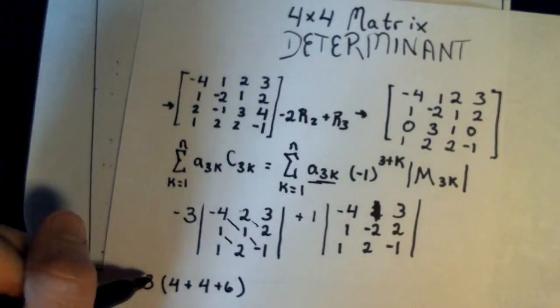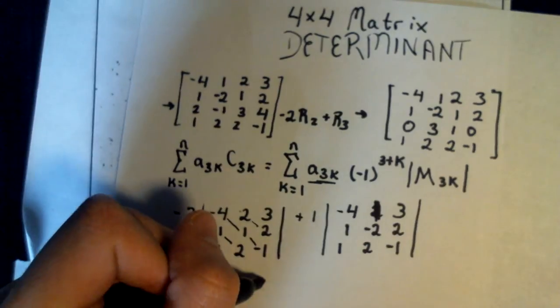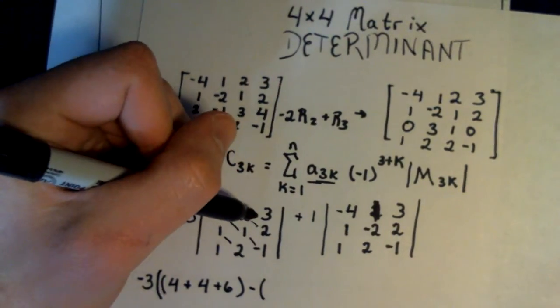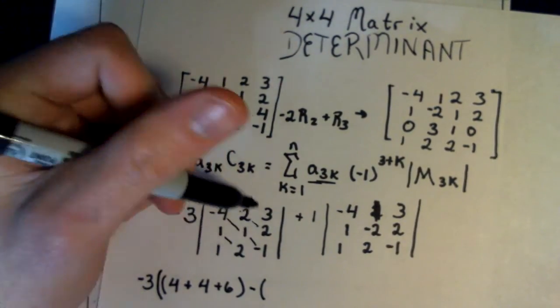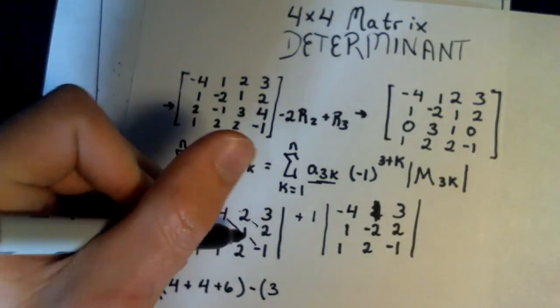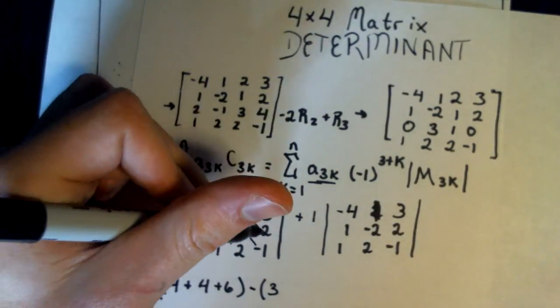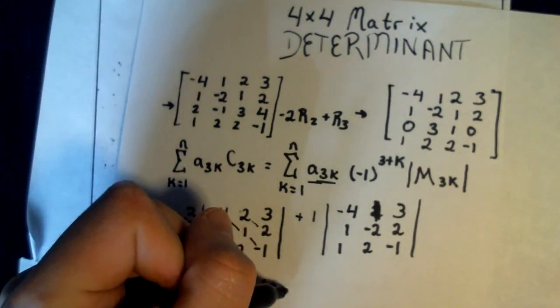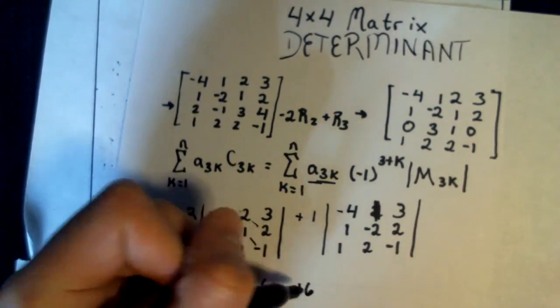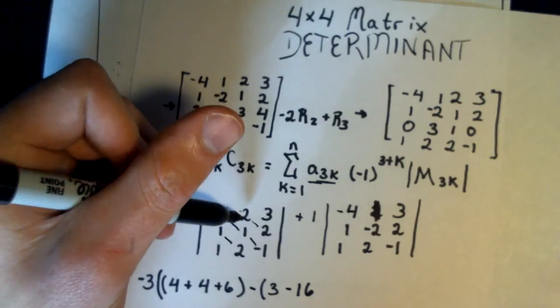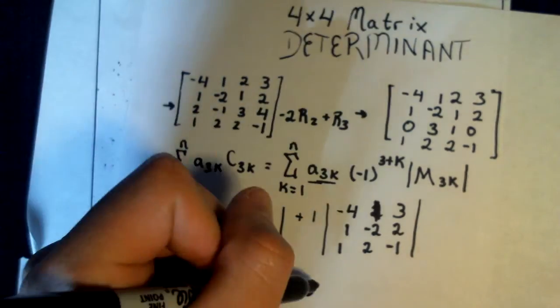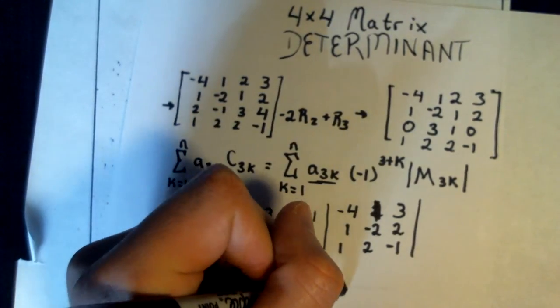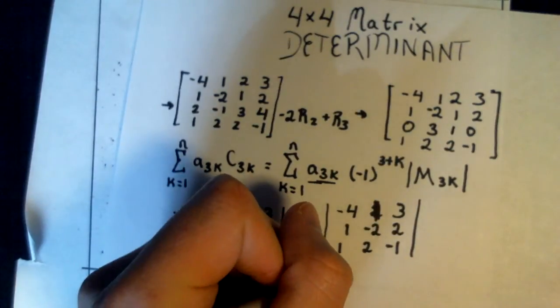And then we're going to multiply 3 by 1 and 2, so that's 6. And then we're going to subtract this diagonal, so that's 3. This diagonal, so that's 2 times 2 is 4 times negative 4 is going to be negative 16. And then this final one is 2 times 1 times negative 1 is negative 2. That's going to all be in a parenthesis.